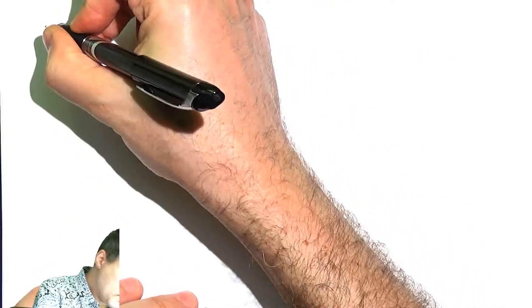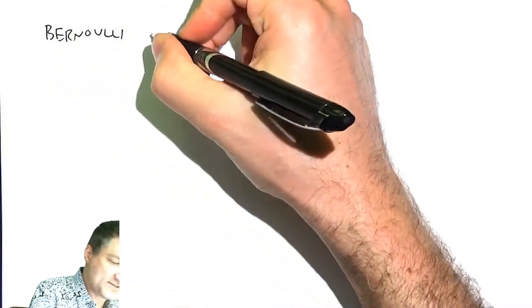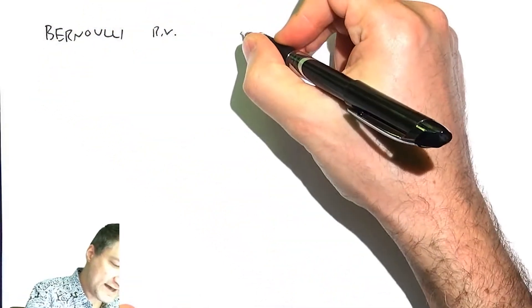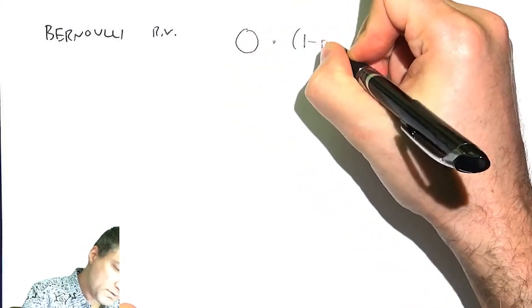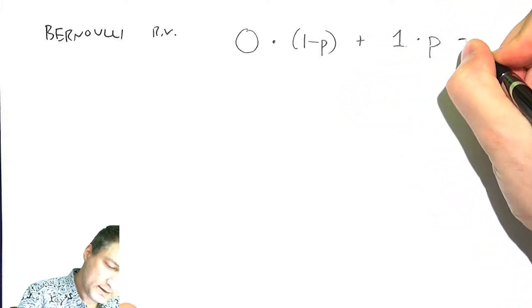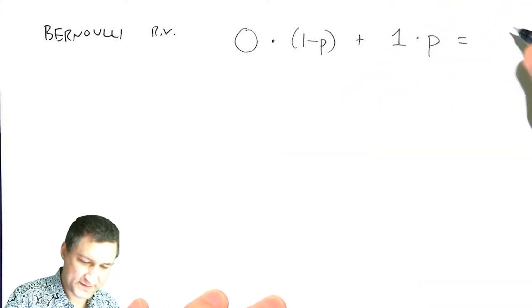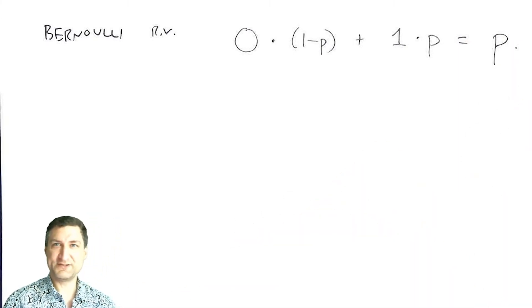So for the Bernoulli random variable, remember that was just success or failure. So I have basically 0 with probability 1 minus p, and 1 with probability p. And so the expected value is just p.